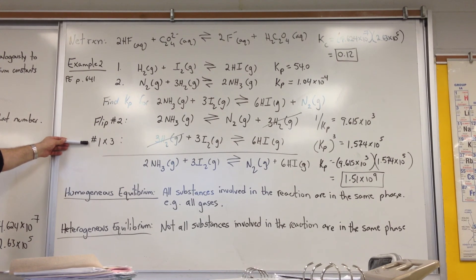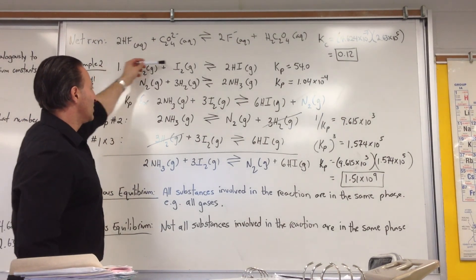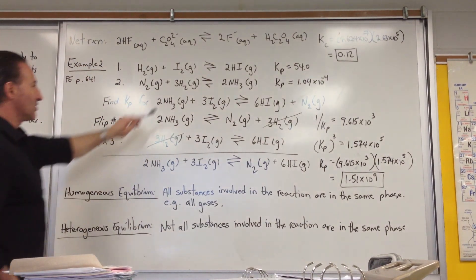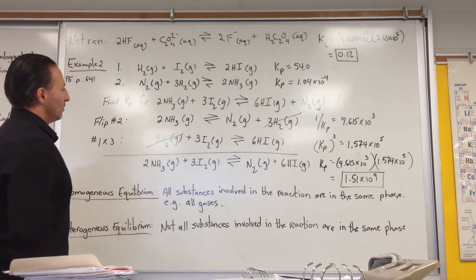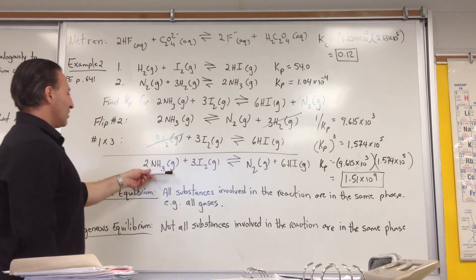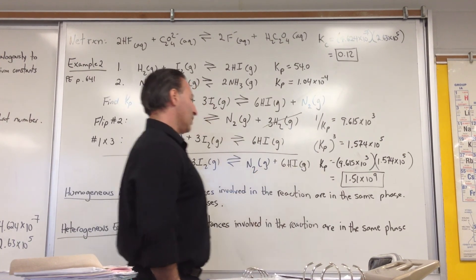We multiply the first reaction by three in order to get the three hydrogens and the three iodines and the six hydriodic acids. And we need it to cancel the three hydrogens over here, which we show here as well. And then you get the target equation: ammonia, iodine, nitrogen gas, hydriodic acid.